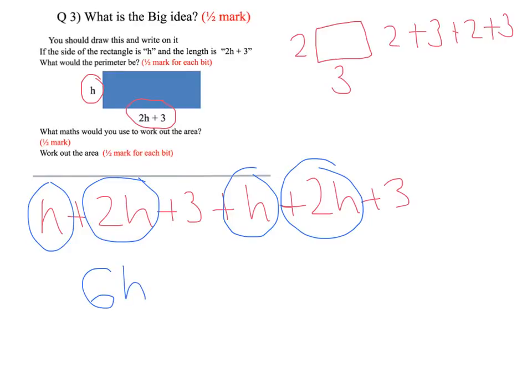That's going to give us 6h. Then we've got to add 3 and 3, and that's going to give us 6, so our perimeter is 6h plus 6.